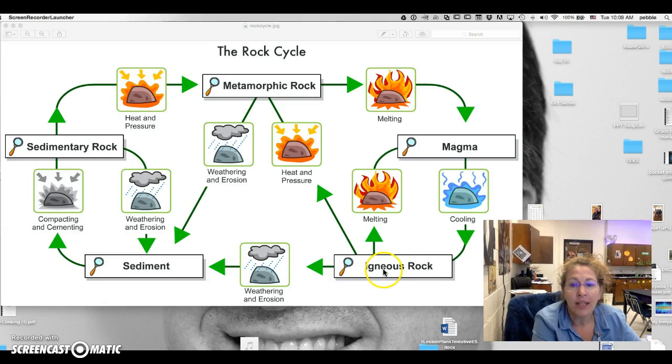We get igneous rocks when magma melts. So if I have an igneous rock and it gets really, really hot, it can melt, turn into magma. When that magma cools, it becomes an igneous rock.